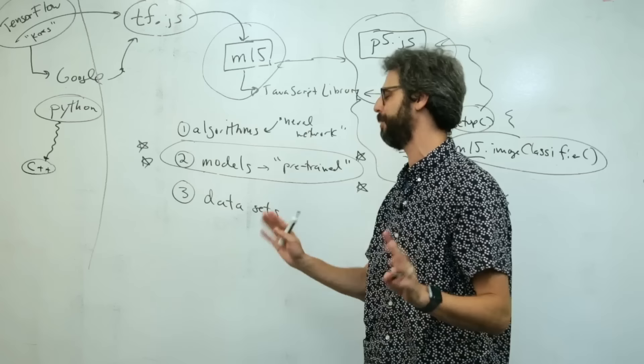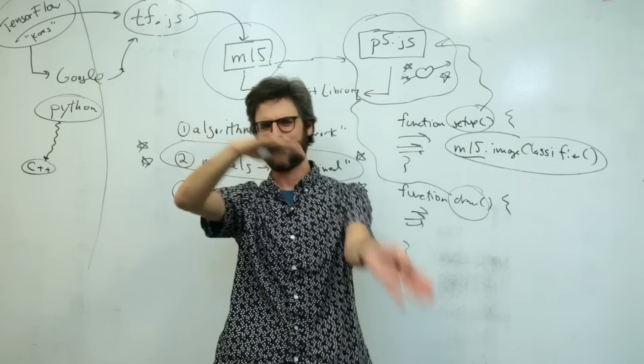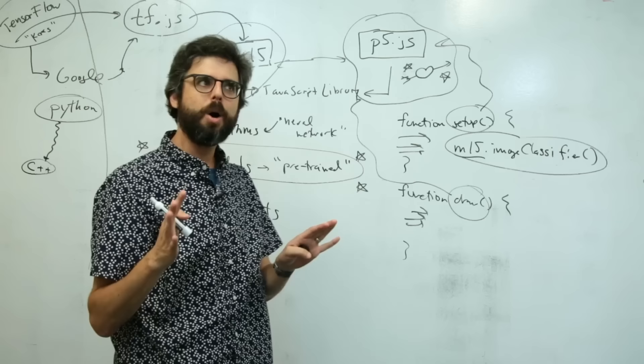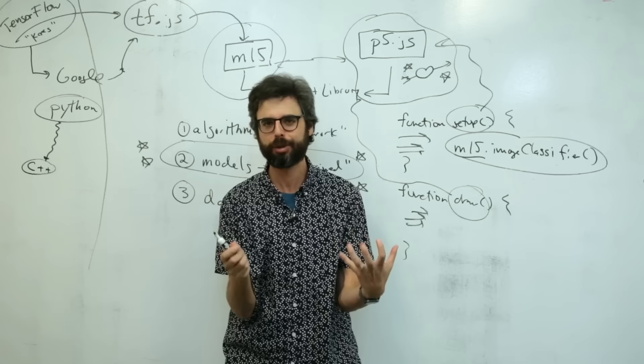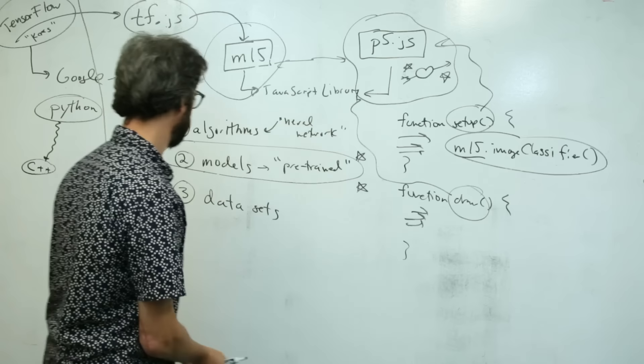There are three, I would say, I'm going to give you, I'm going to talk about three components of the field of machine learning right now. There are particular machine learning algorithms. One example of that is something that you might have heard of called a neural network. This is an algorithm to perform a machine learning task. There are many other examples of algorithms. There are also, there's something known as machine learning models. And in particular, there's this idea of a pre-trained model.